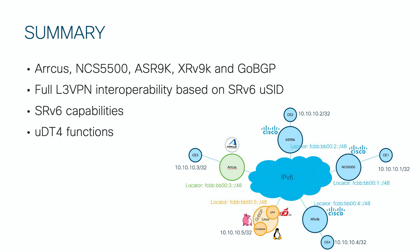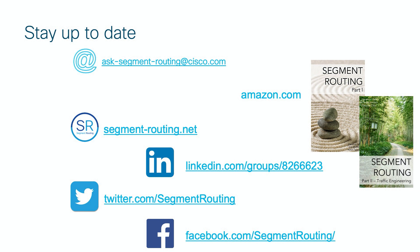We have demonstrated full L3 VPN interoperability among five different SRv6 implementations, showing full control and data plane functionality. We also demonstrated the simple programmability of SRv6 across different platforms. All devices were using SRv6 micro-SID, which allows excellent MTU efficiency and is very hardware friendly. This works exactly the same way with VPNv6 address family and UDT6 function. For more information, the best source is always segment-routing.net.